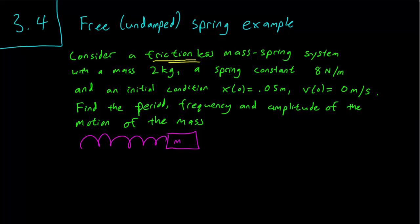We have initial condition, x0 equals 0.05 m and v0 is 0, so there is no initial velocity. So the problem asks to find the period, frequency and amplitude of the motion of the mass.